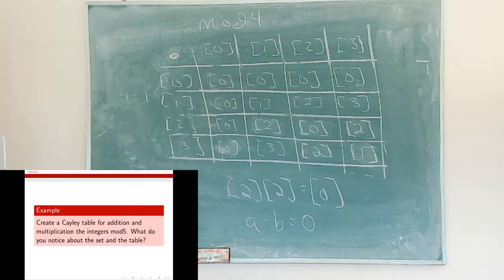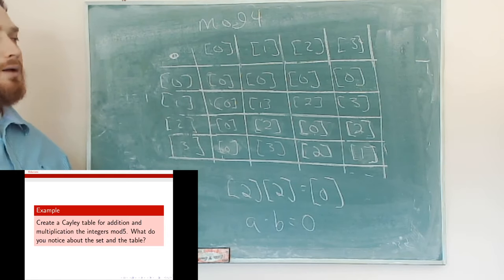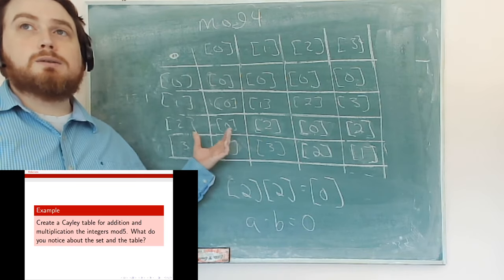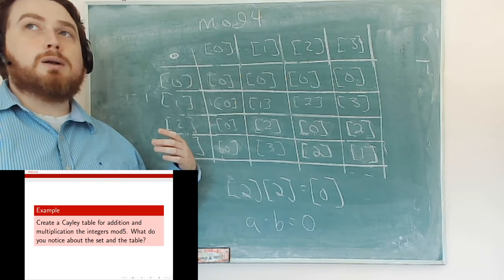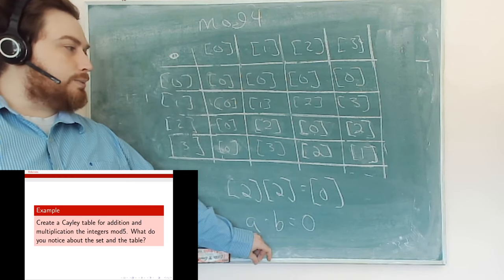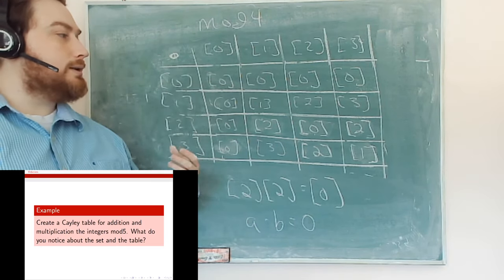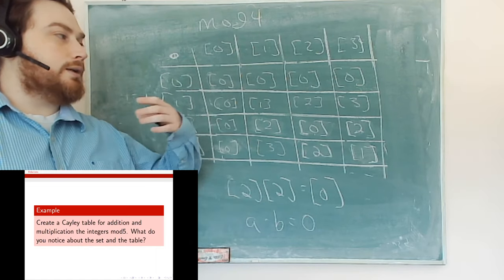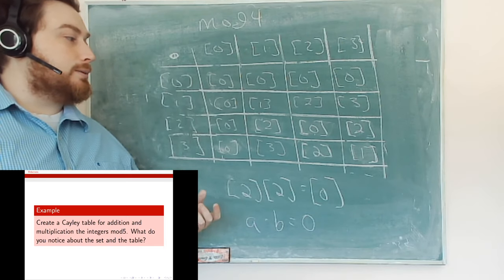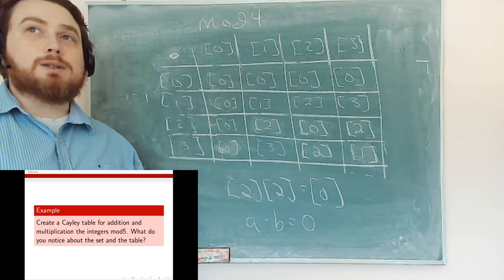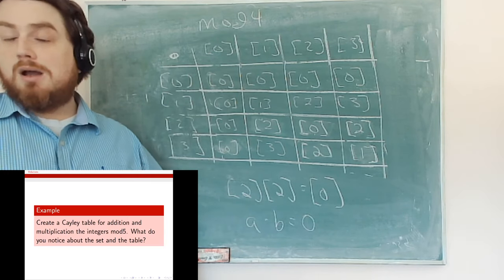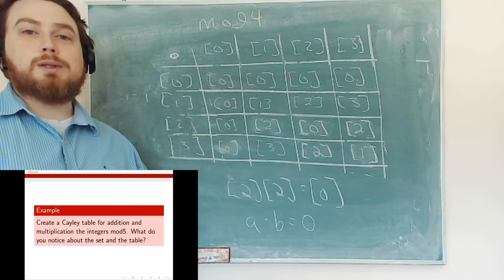So we can get interesting things happening with non-standard addition and multiplication. Some old properties are still maintained, but we also get new things. This gives us something to work with — we can define new multiplications and additions to get different properties. I'll leave the lecture here; I don't want to start functions yet. If you take abstract algebra, you'll be looking at different types of addition and multiplication and deciding what properties they hold. Thank you for joining me, have a wonderful weekend, and I'll see you on Monday.